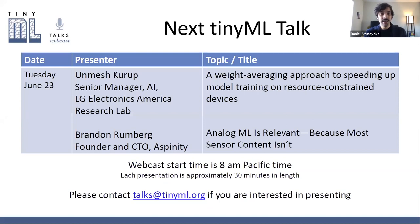Our next TinyML Talk is coming up on Tuesday June 23rd. We have these every Tuesday, pretty much every Tuesday. Our first presenter is Unmesh Khouroup from LG Electronics America Research Lab, talking about a weight averaging approach to speeding up model training on resource constrained devices. Our second talk is from Brandon Rumberg at Aspinity talking about analog ML and how analog ML is relevant because most sensor content isn't. If you are interested in presenting at a future talk, let us know via talks@tinyml.org.